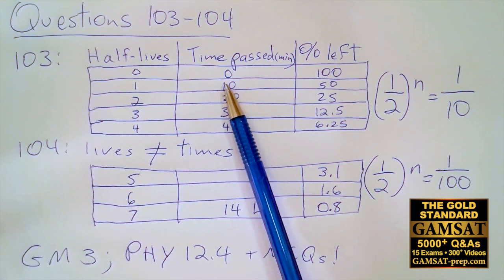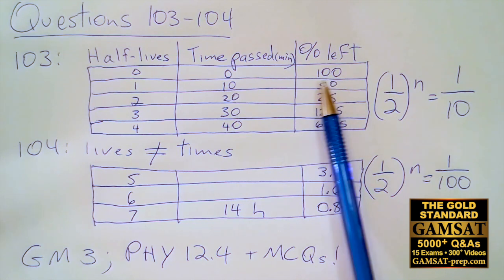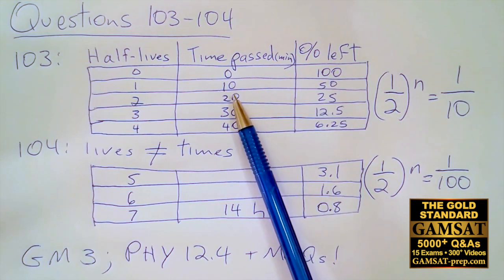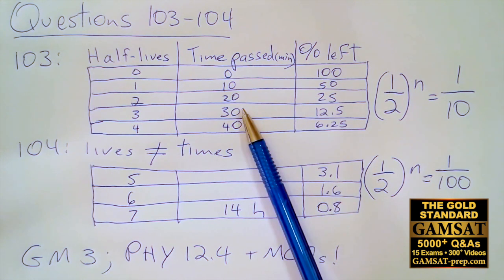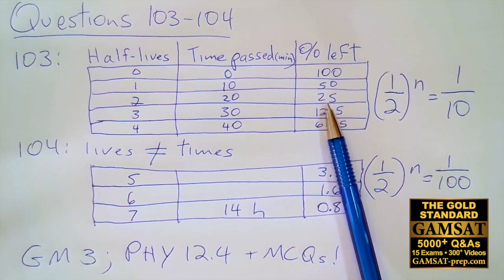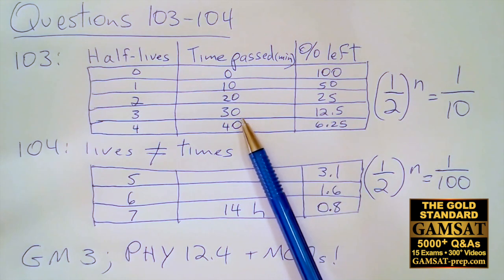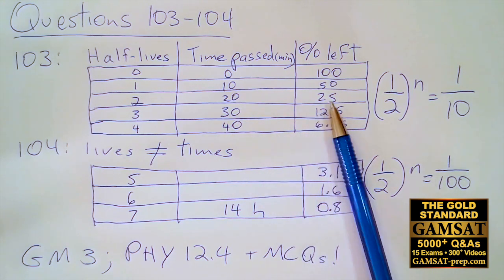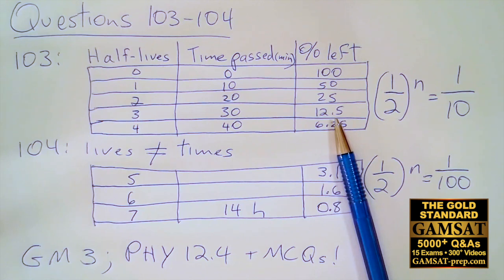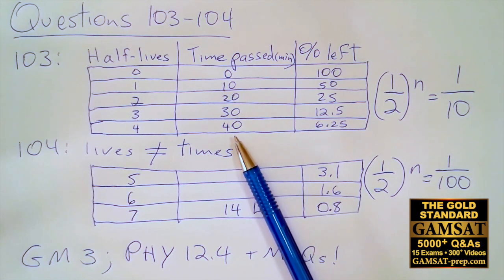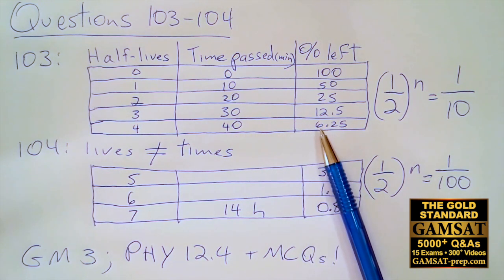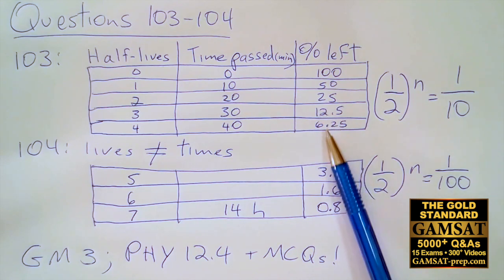A simple way to do this is to say when no time has passed we have 100% left. When 10 minutes have gone by, that being the half-life, we have half left. Another 10 minutes for a total of 20 minutes, we have 25% left. Another 10 minutes for a total of 30, we have 12.5%. Another 10 minutes for a total of 40, and we have 6.25%.